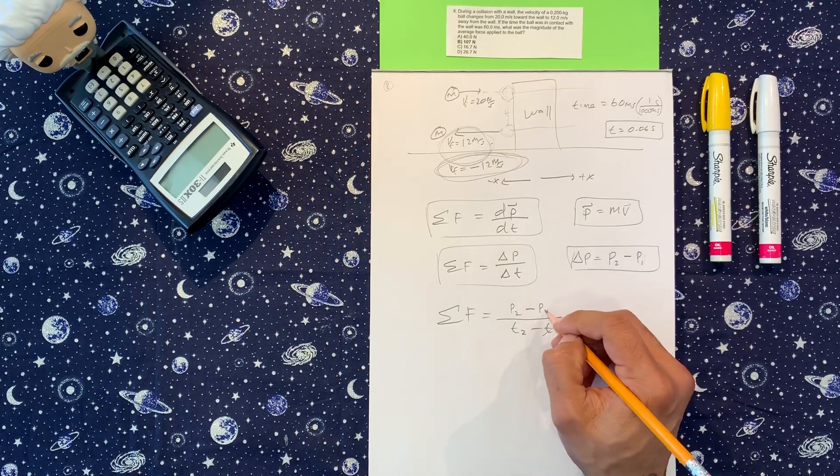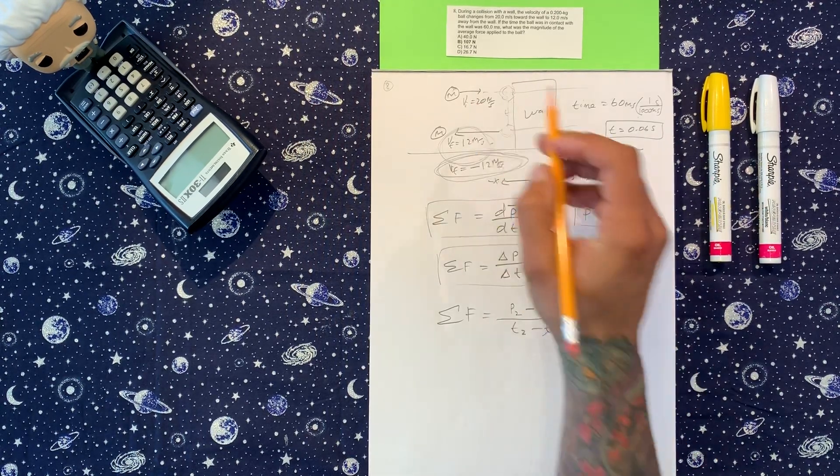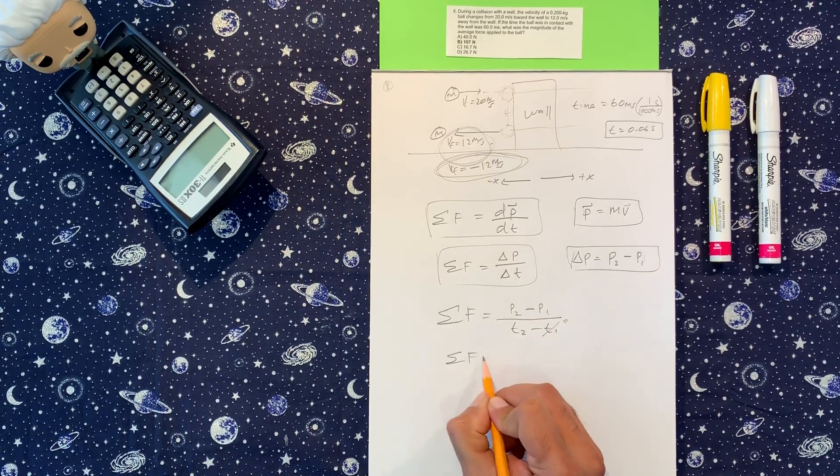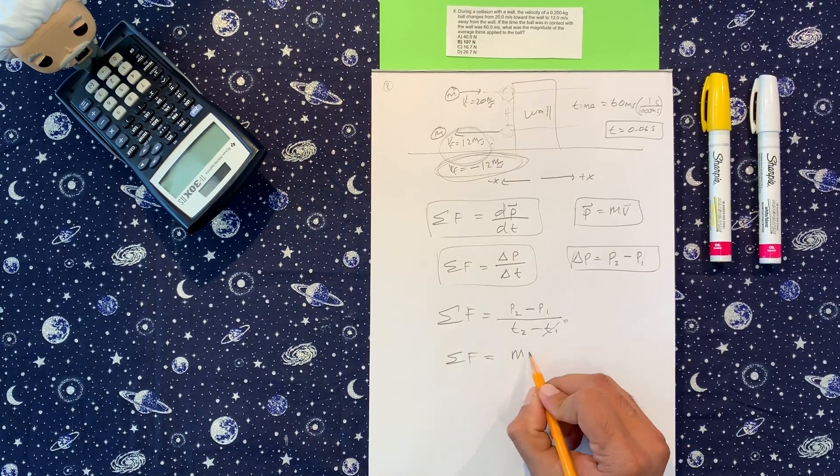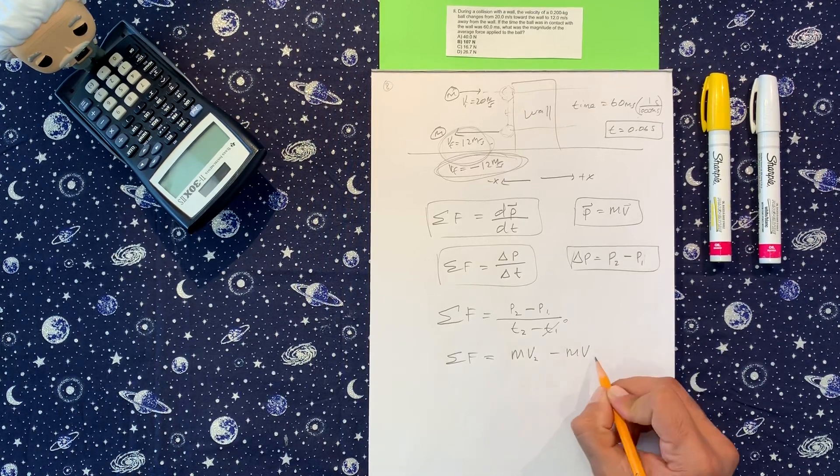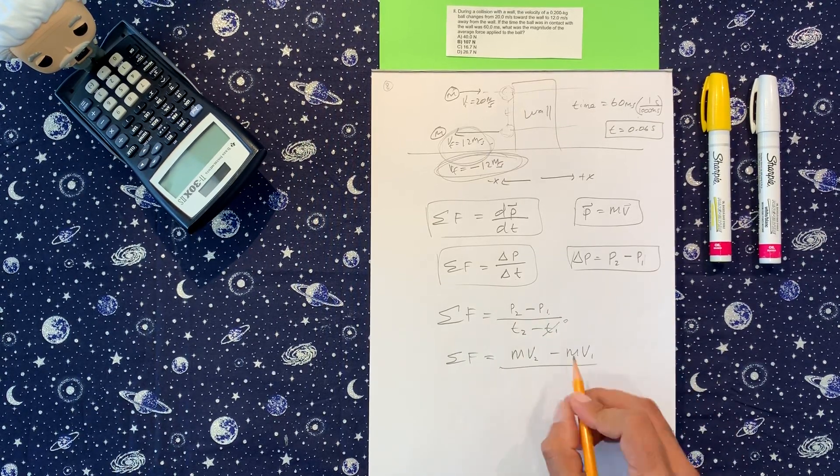But these two you have to look carefully because initially the momentum, which is mass times velocity, let's write that so that way it's clear: mass times velocity 2 minus mass times velocity 1, that's what's written on the top, over t squared.